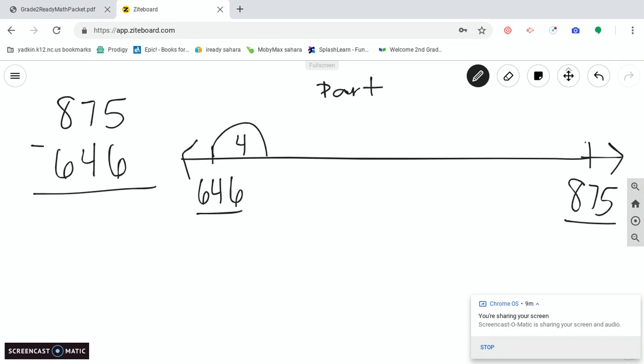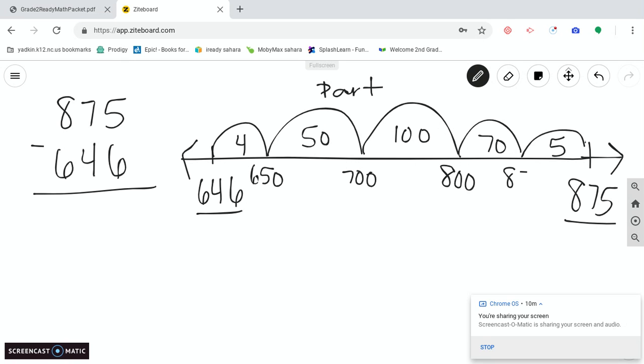If I start with 646 and I want to get to 875, I want to make this friendly. So the first thing I'm going to add is 4 to get to 650. Then I want to add 50 to get to 700. Now I have a friendly number. Let's jump to another friendly number, jump 100 to get to 800. And then we know we can add 75 to get to 875. But because my answer is in my jumps and I'm going to have to add those together, I'm going to add 70 and then 5 instead of doing 75 together.